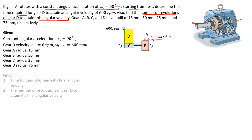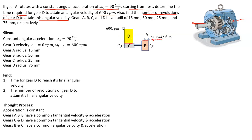We've got all of our information. We're trying to find the time for gear D to reach its final angular velocity, and the number of revolutions for gear D to attain that final angular velocity. The acceleration is constant. Gears A and B have a common tangential velocity and acceleration; gears C and D have a common tangential velocity and acceleration. We're going to follow the path of the power through gear A to B to C to D.